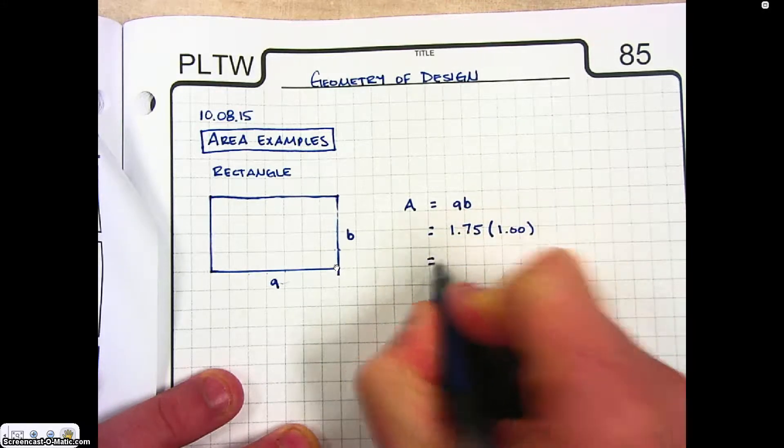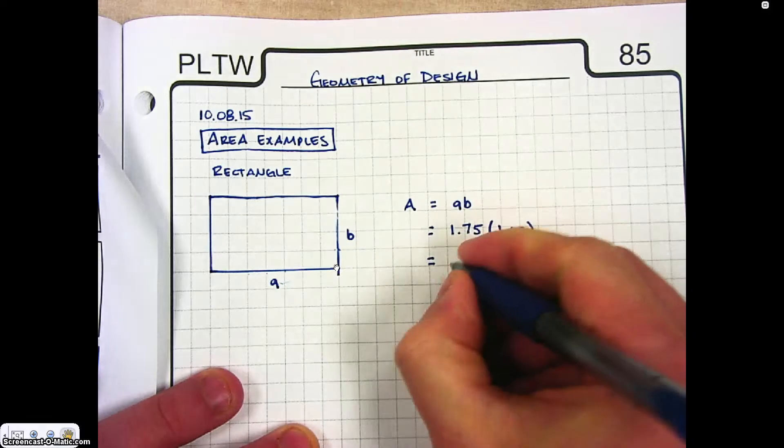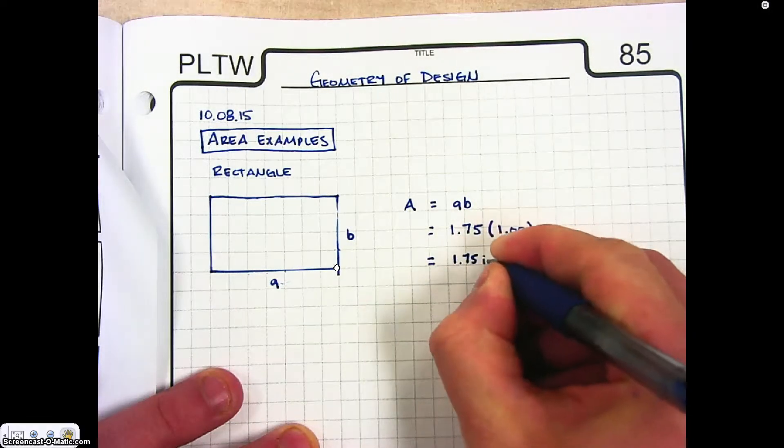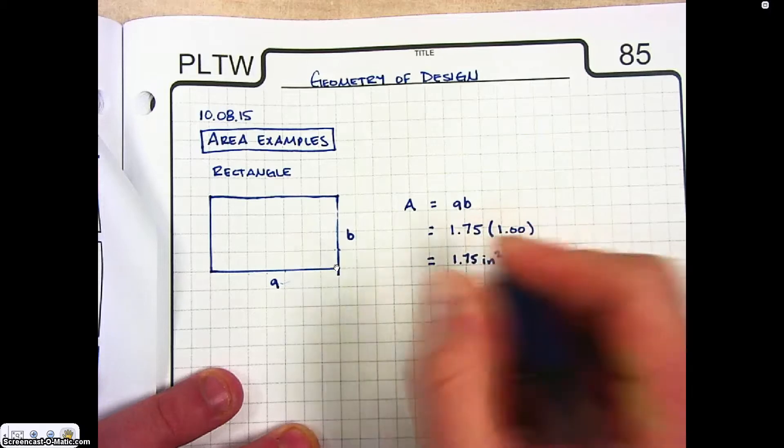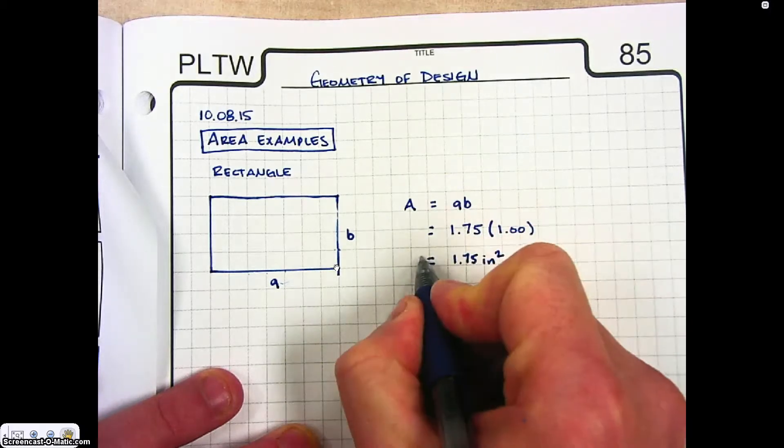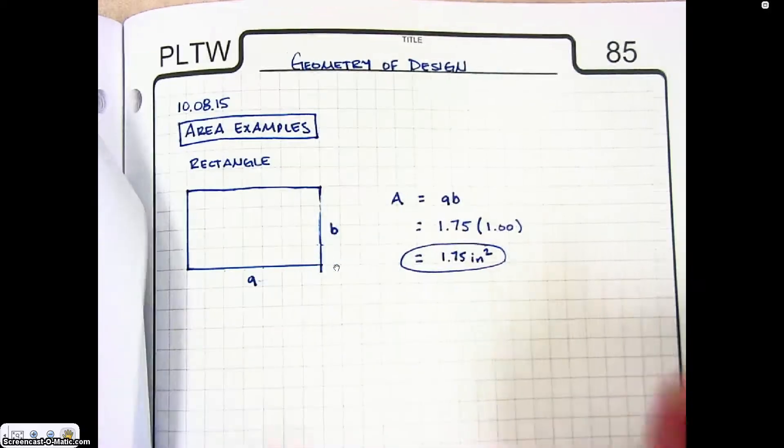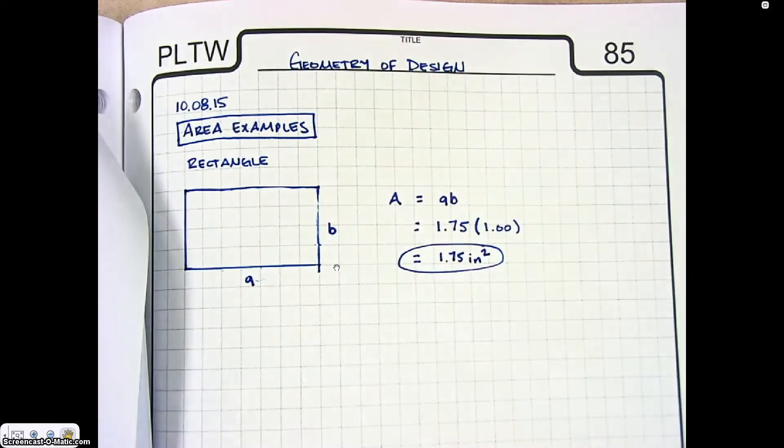And so our area is 1.75 inches squared. So here's your example for the area of a rectangle.